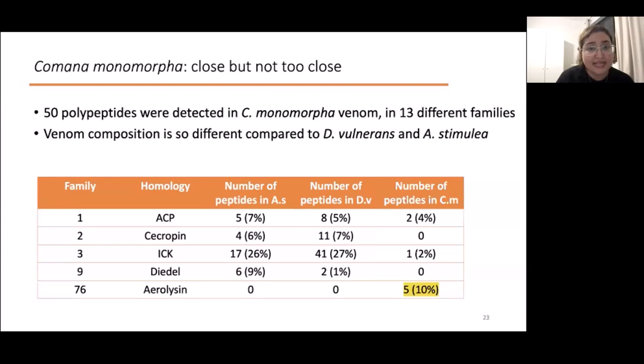But the same results for Comana monomorpha, which is another caterpillar from the same state in Australia, from Queensland, was surprisingly different. The venom of this one has so many big aurelizing proteins and doesn't have any sacropines, doesn't have any didelsins. These results show that venom composition can vary widely between different species of Limacodidae and it might also suggest that morphotype might have a stronger effect on venom composition compared to genotype.